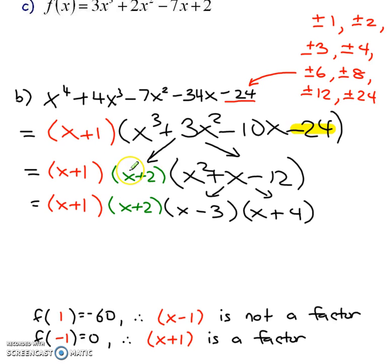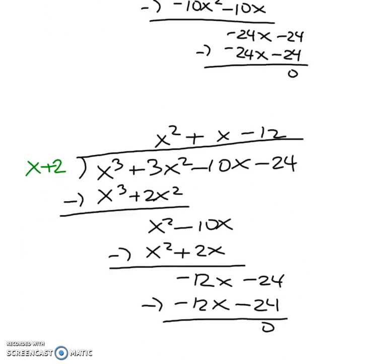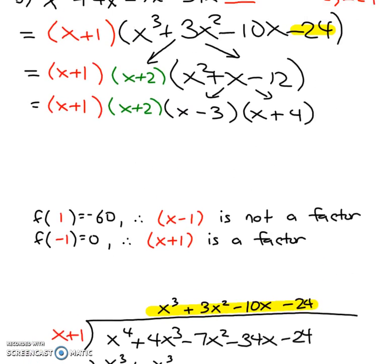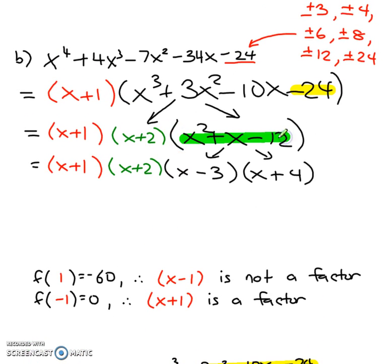I took the entire cubic as my new dividend and divided it by x plus 2 as my new divisor, did the long division, and got my new quotient — highlighted in green. Now if I really wanted to I could do the process again to find another factor, but this is a quadratic. I can easily break it down into two factors through regular factoring. So that's how we find all of our factors.